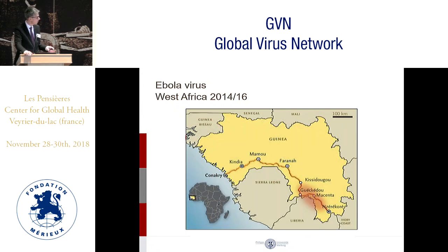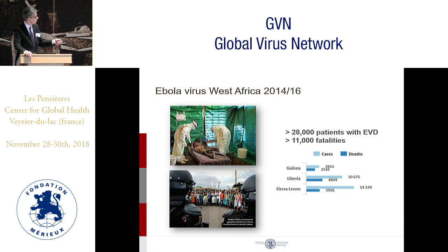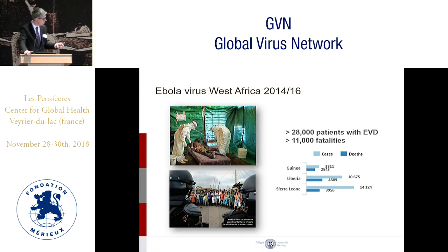The West African outbreak took place in the region between three countries: Guinea, Sierra Leone, and Liberia. Instead of the familiar pictures of isolated patients being cared for in full protection, we now saw angry crowds who disagreed with quarantine measures. During this outbreak, there were several attacks on healthcare workers and a lot of insecurity in the three countries. This was by far the largest Ebola virus outbreak so far: 28,000 patients and 11,000 fatalities, which was unprecedented.